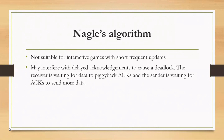With Nagle's algorithm, the sender is waiting until it gets an acknowledgement to send more data. With delayed acknowledgement, the receiver is waiting to get more data before sending an acknowledgement. If there is some loss of data or other issue, you may have a deadlock scenario because one is waiting for the other — these are some of the issues that can arise with Nagle's algorithm.